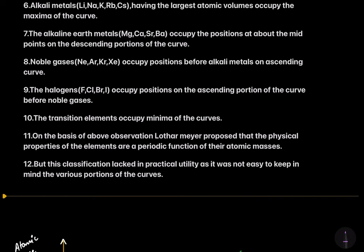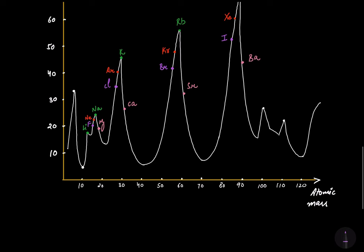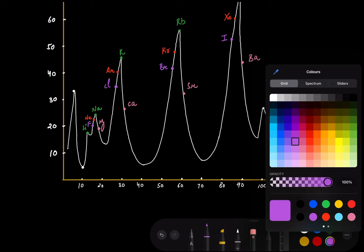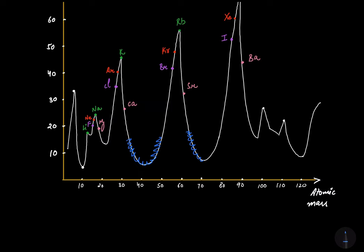The transition elements occupy the broad minima of the curves. The broad minimas are the wide, flat bottom portions between the peaks. Transition elements are those in which the last electron enters the d-subshell, and they are placed at the broad minima of Lothamere's curve.